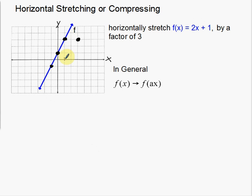We multiplied by a factor of 3. For the y-intercept, it has an x-coordinate of 0, so 0 times 3 means nothing actually changes — that point stays where it is. This point has an x-coordinate of negative 1, so multiplying by 3 gives negative 3. And this point with x-coordinate negative 2, multiplying by 3 gives negative 6.